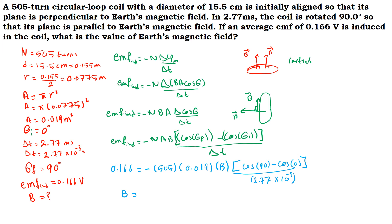Now, cosine theta final, which is 90, minus cosine theta initial, which is 0, over delta T, which is given.